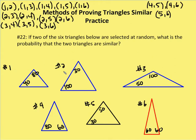I've now numbered the triangles 1, 2, 3, 4, 5, and 6. So the combinations are going to be 1 and 2, 1 and 3, 1 and 4, 1 and 5, 1 and 6. 2 and 3, 2 and 4, 2 and 5, 2 and 6. 3 and 4, 3 and 5, 3 and 6. 4 and 5, 4 and 6, and 5 and 6.